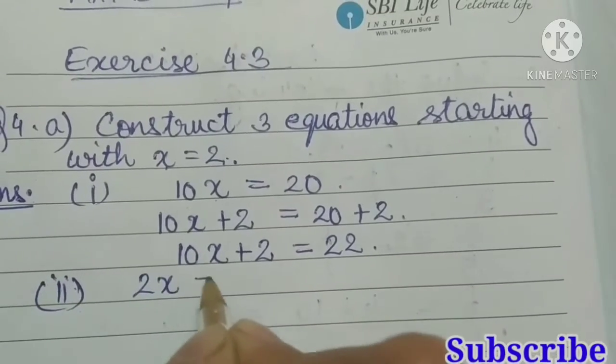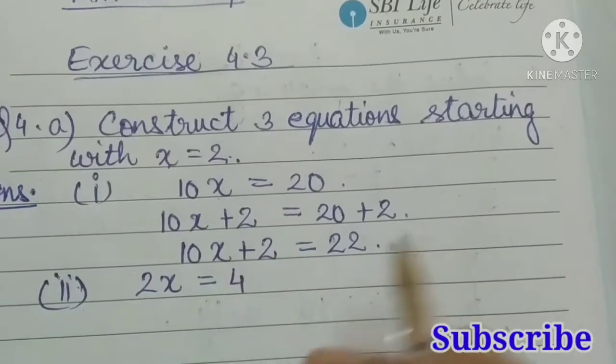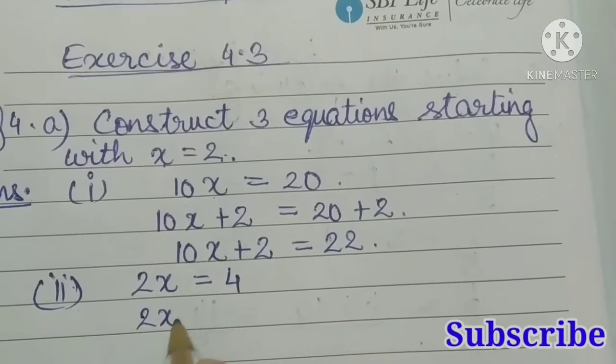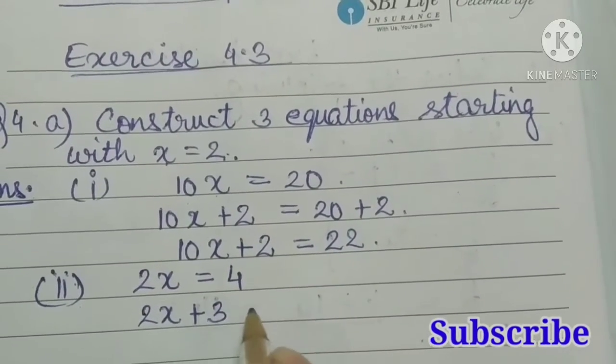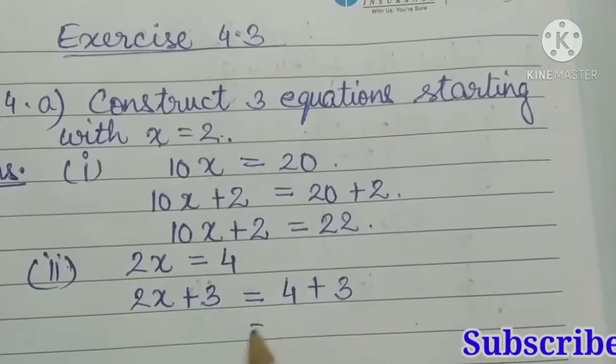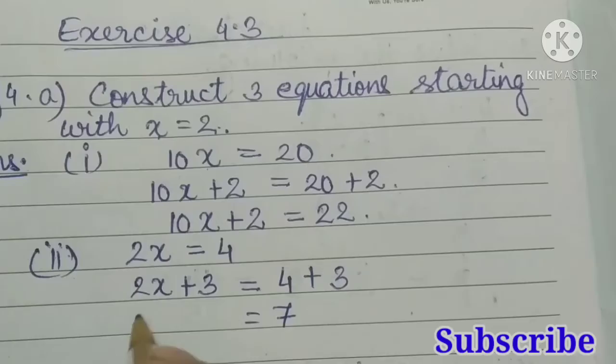So we will get 2x equal to 2 times 2 is 4. Now let us add 3 on both sides, so we will get 2x plus 3 is equal to 4 plus 3, that is equal to 7. So our equation is 2x plus 3 is equal to 7.